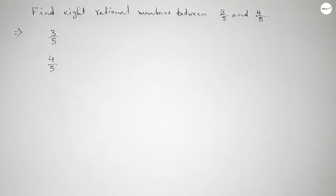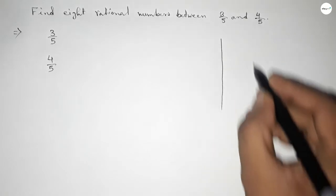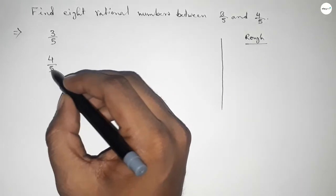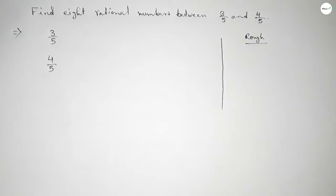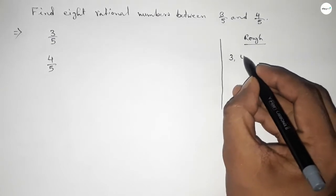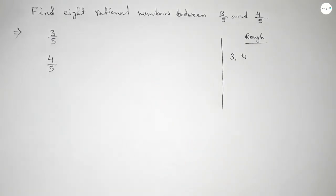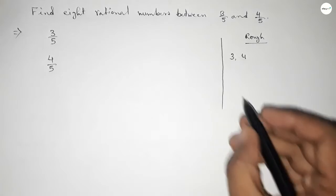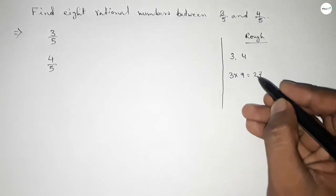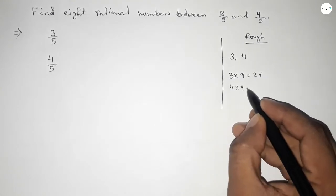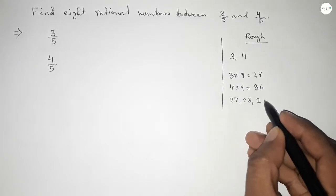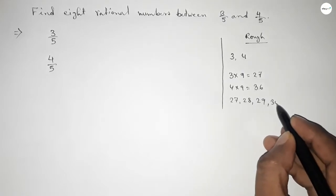Now roughly discussing some important calculation here. This is rough space. Here the denominator of both are same, so we have to increase the gap between 3 and 4. If you multiply 3 by 9, this is 27, and 4 by 9 is 36. So now between 27 to 36 we can get eight natural numbers.